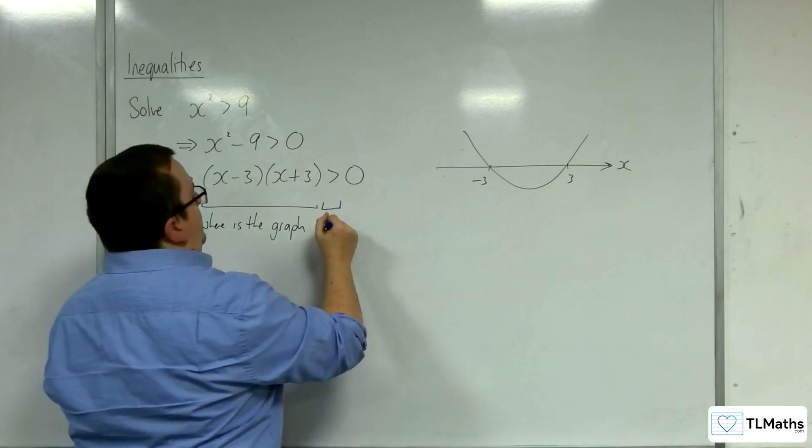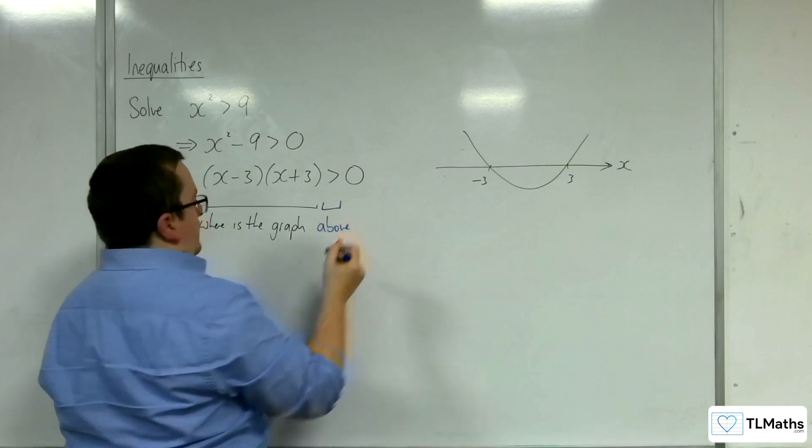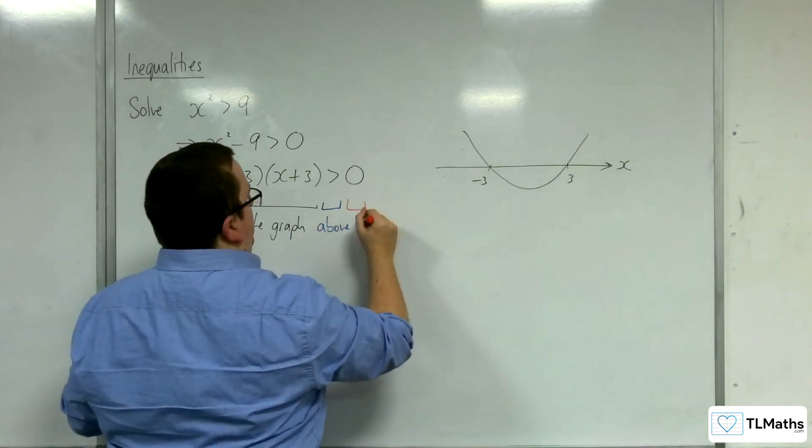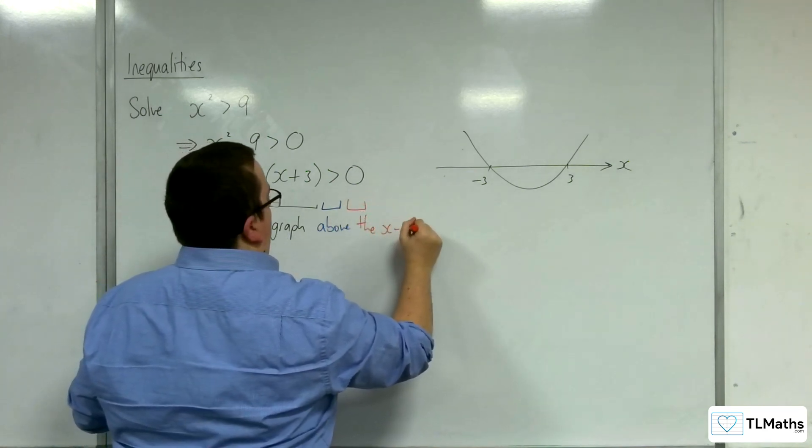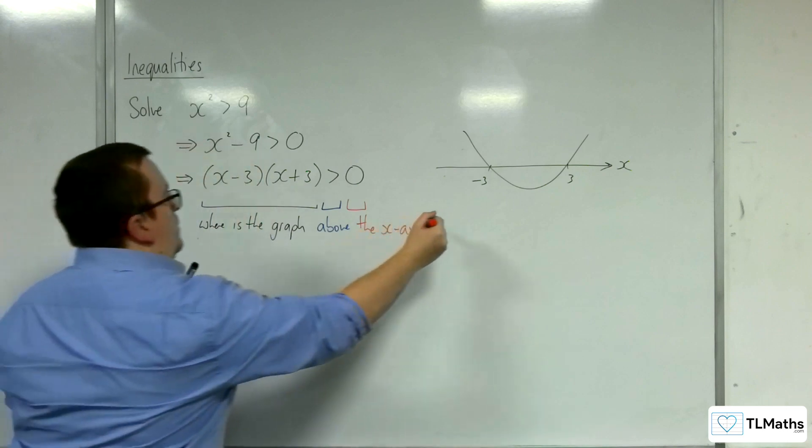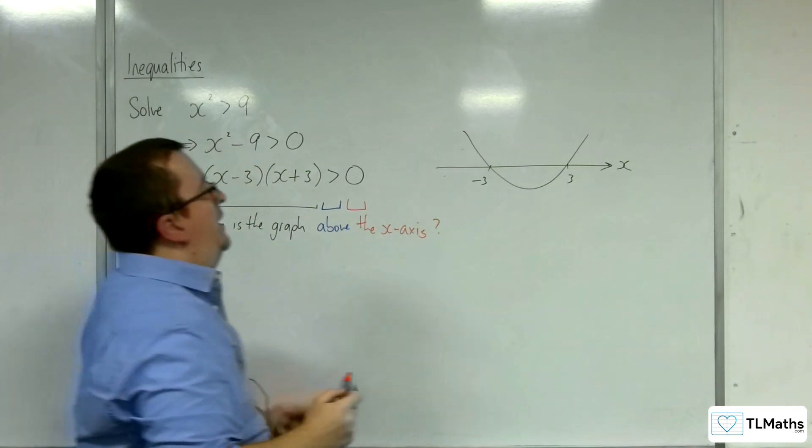Greater than means above, and 0 still means the x-axis. So where is the graph above the x-axis?